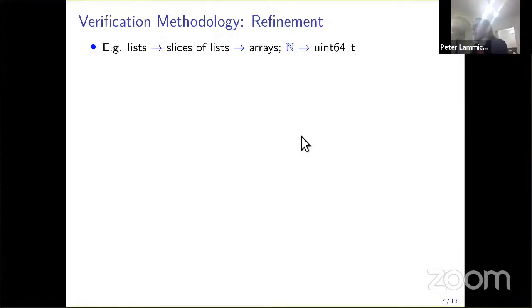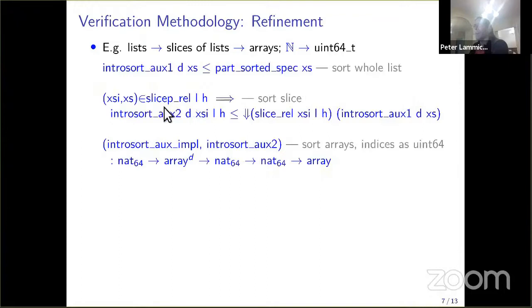Another important methodology is refinement. We start with lists. We start with an introsort formalization that sorts the whole list. Then we refine it to slices of lists. We consider the slice of the list from index L to index H. We don't need to show the whole algorithm is correct, only that the new implementation does the same as the old implementation.